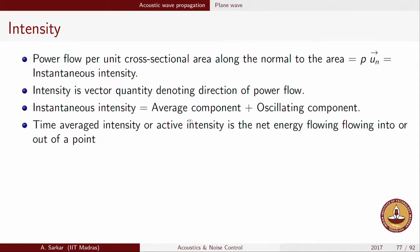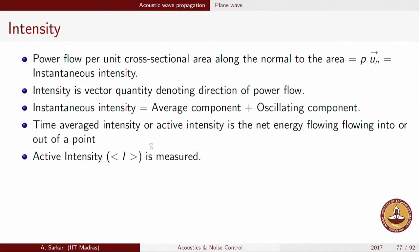More often than not we work with the active intensity rather than the instantaneous intensity. It turns out that the active intensity is the quantity which can actually be measured using an instrument called an intensity probe. The active intensity or average component is computed as a time average: we integrate the instantaneous intensity over a sufficiently large time period T and divide by 1/T.